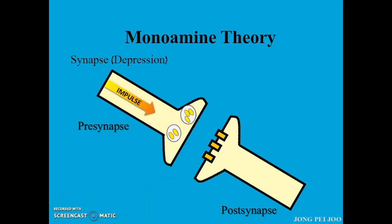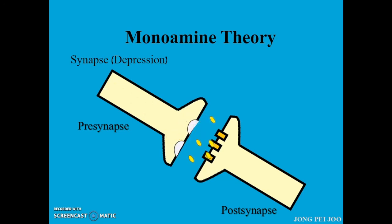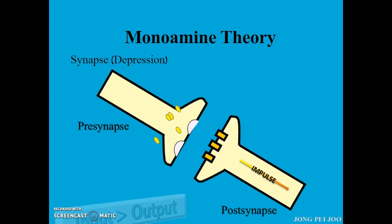For a person who suffers from depression, the monoamine present in the presynapse is less than that in a normal person. Hence, less serotonin is released into the synapse and the receptors are not fully occupied. Therefore, the impulse transmitted out is less than that transmitted in — in other words, the output is less than the input. The serotonin is then reuptaken by the presynapse.